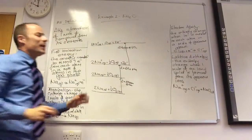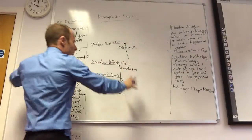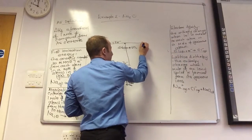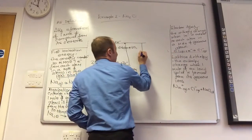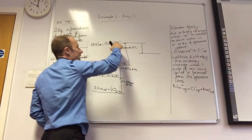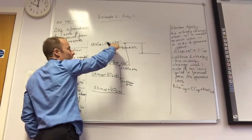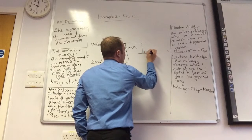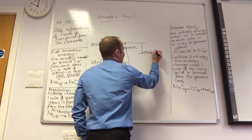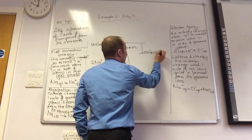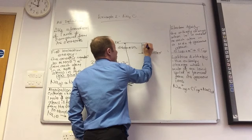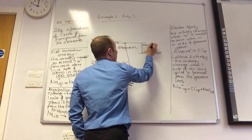Next I've got O. Where do I normally go next? I'm going to take one of those electrons and stick it on my oxygen. So I've now got 2 Na⁺ gas plus O⁻ gas plus an electron. That's ΔH first electron affinity of O.